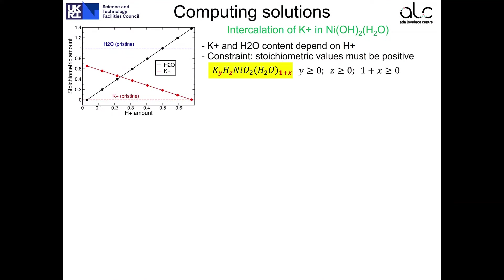So now we report the computed solutions. In this graph, we show the amount of potassium and water as a function of the amount of protons in the material. We cannot have any possible solutions. The constraint is that the stoichiometric values for each one of the involved species must be either zero or positive. Based on this constraint, the valid set of solutions span from a content of protons that goes from 0.03 to 0.68. So the solid lines represent the infinite number of solutions that we discussed about, whereas the dots are the finite set of solutions that we consider.